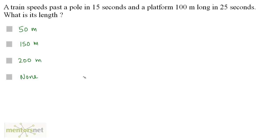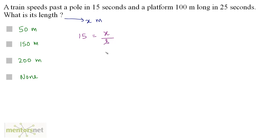A train speeds past a pole in 15 seconds and a platform 100 meters long in 25 seconds. What is the length of this train? Let us keep the length of this train as X meters. This train speeds past a pole in 15 seconds, so the time taken to travel X meters is 15, which equals distance upon speed: X meters upon speed S meters per second.